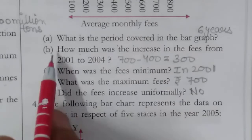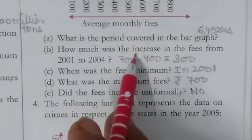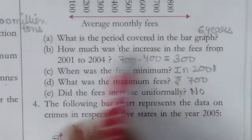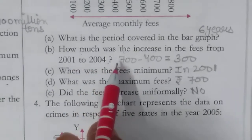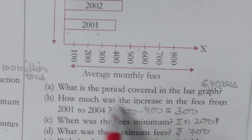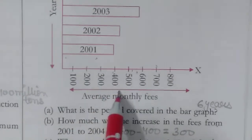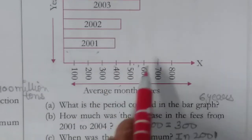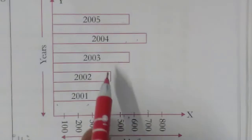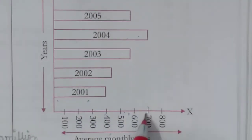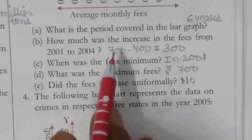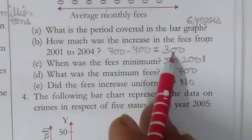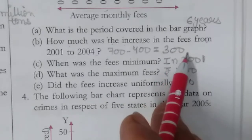Now the B part of this question: how much was the increase in the fees from 2001 to 2004? In 2001, fees were 400. In 2004, fees became 700. So the increment from 2001 to 2004: 700 minus 400 gives a difference of 300 in fees.